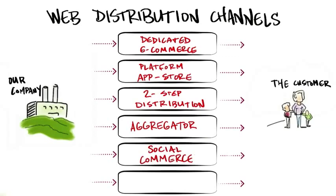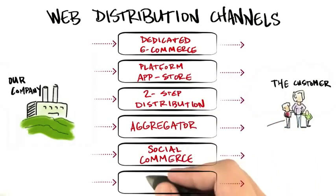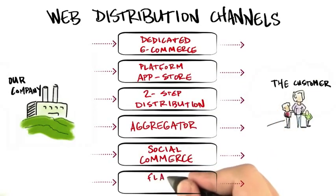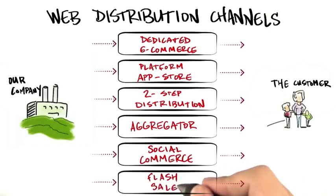Another might be social commerce. Social commerce sites for distribution might include Facebook, Twitter, et cetera. Zynga, which is a video game company, uses predominantly Facebook as its platform. And then finally, flash sales — examples include Groupon and LivingSocial.